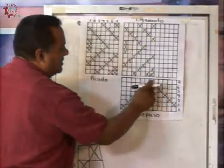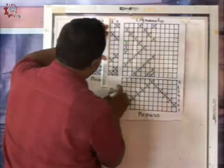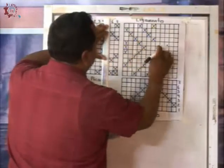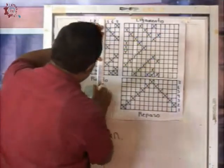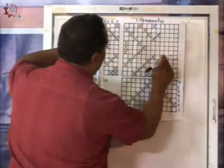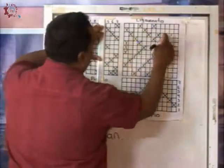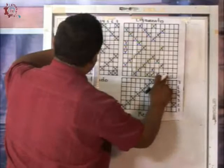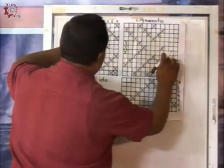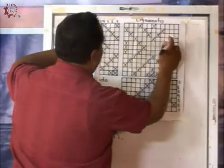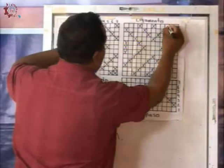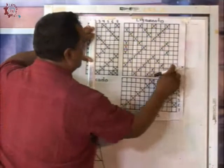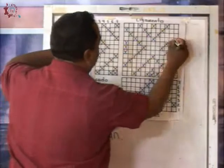Pero ahora me está indicando que hay que bajar del seis al número dos. Entonces el seis: tomo uno, dejo dos, tomo uno, dejo cinco y tomo uno. Después el cinco: dejo dos, tomo uno, dejo tres, tomo uno, dejo tres y tomo uno. Después el cuatro — voy de regreso: dejo uno, tomo uno, dejo tres, tomo uno, dejo uno, tomo uno, dejo tres, tomo uno. Después el tres: tomo uno, dejo tres, tomo uno, dejo tres y tomo uno.